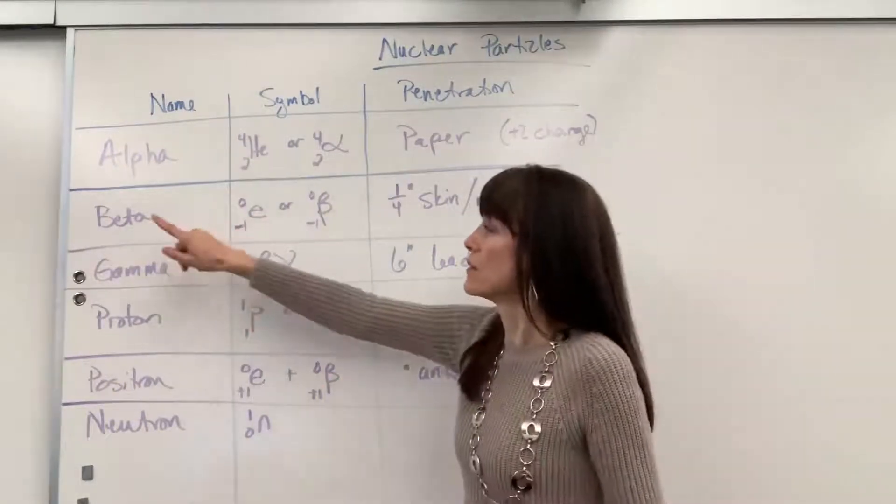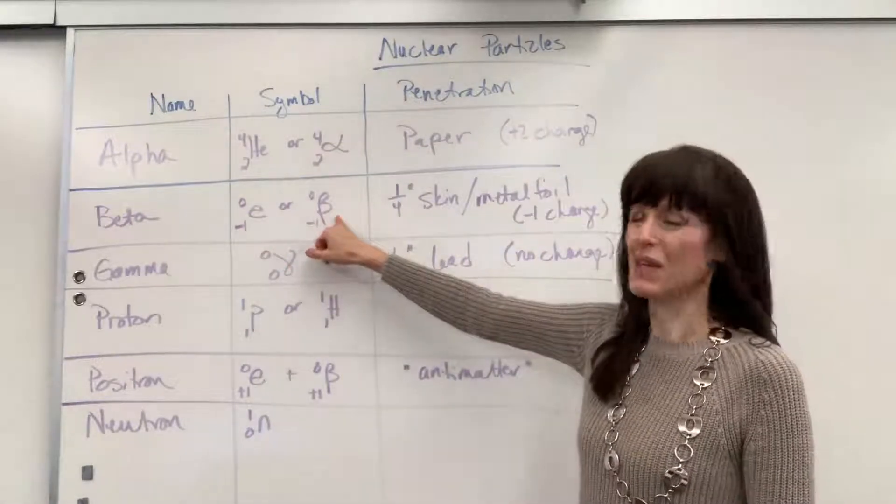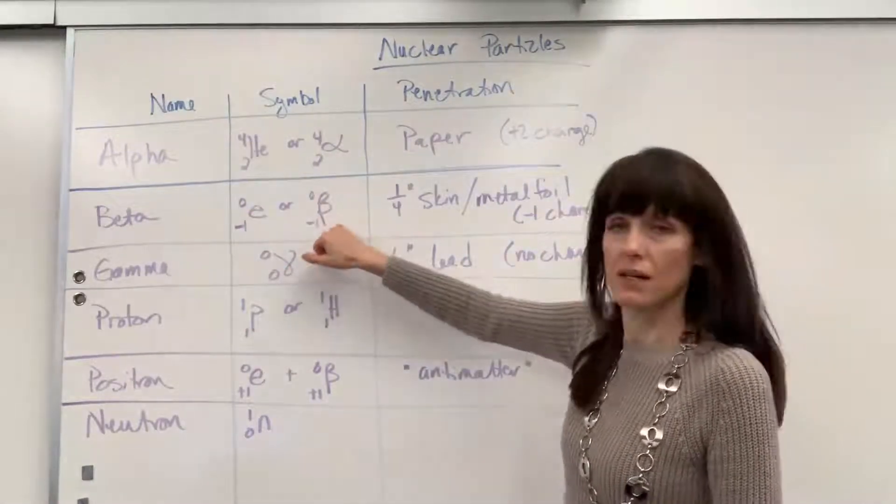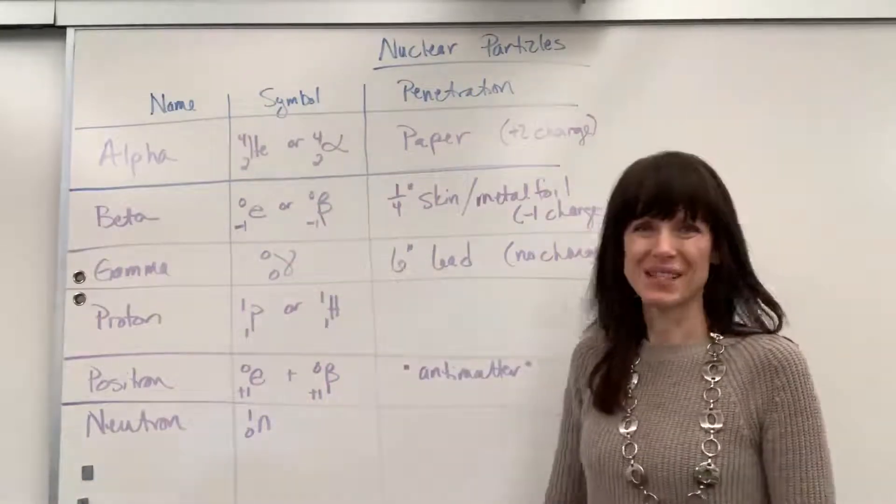Okay, now that word beta in the Greek alphabet, here it is. There's the B. You could also do a B with a tail, there's your beta, and do the negative one and the zero.